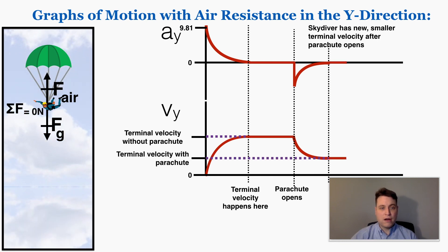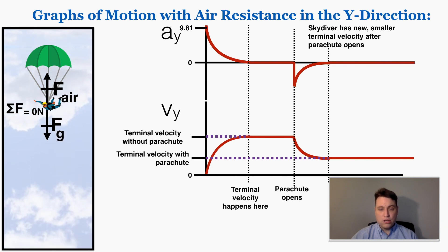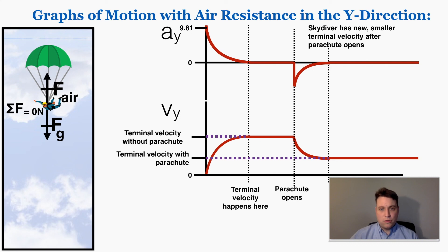This is the reason why people use parachutes when skydiving — when you open the parachute, you achieve a much smaller terminal velocity so you can land safely. You won't need to do specific math with these types of graphs. The important thing is to understand why the patterns are the way they are: why they curve in certain spots, why they stay flat in certain parts, and what those curves and flat parts mean in relation to the forces and velocities.